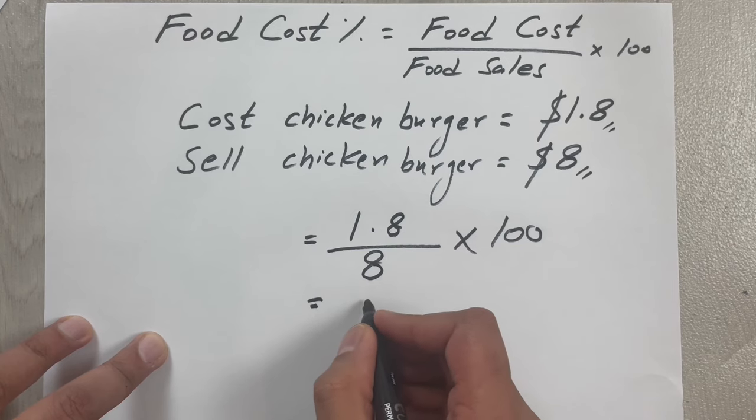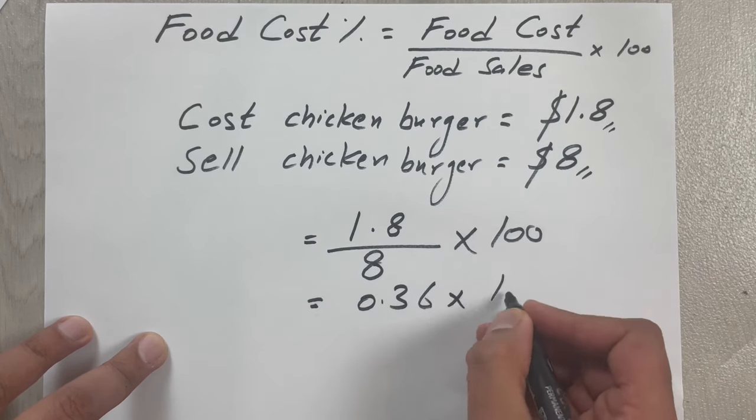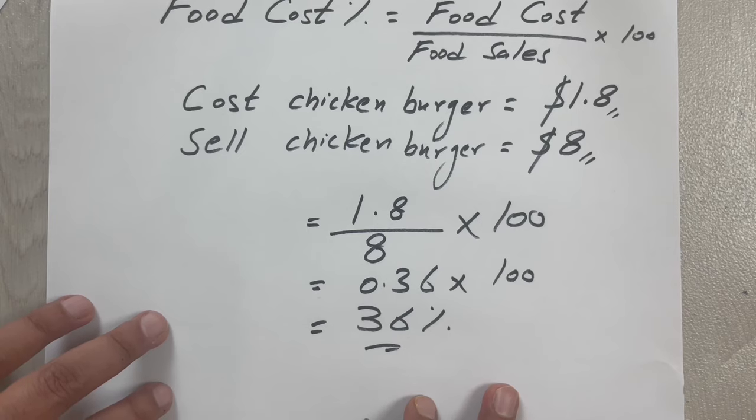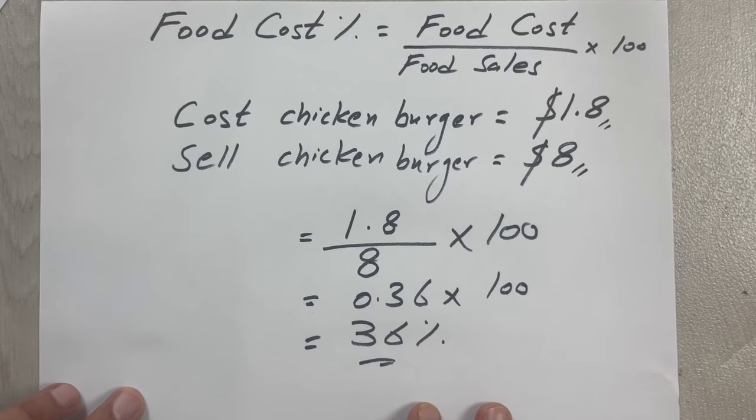Our answer is 0.36 when we divide this, then multiply by 100, so our answer is 36%. This means 36% of the selling price will be allocated to the food cost. This is how we can calculate the food cost percentage.